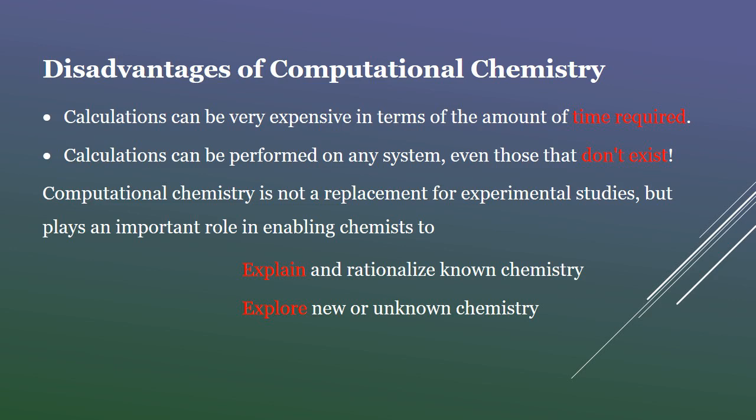Computational chemistry is not a replacement for experimental studies, but plays an important role in enabling chemists to explain and rationalize known chemistry and explore new or unknown chemistry.